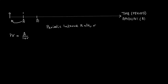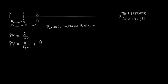Now suppose you expect to receive A dollars at the end of each of the next two periods. To calculate the present value of these two cash flows, we first discount the A dollars received at the end of period 1 as before. Then the second payment of A dollars is discounted over two periods. So the present value equals A divided by (1 plus R), plus A divided by (1 plus R) squared.